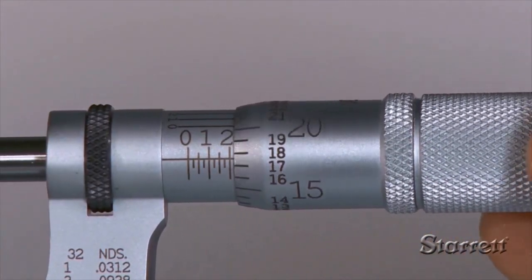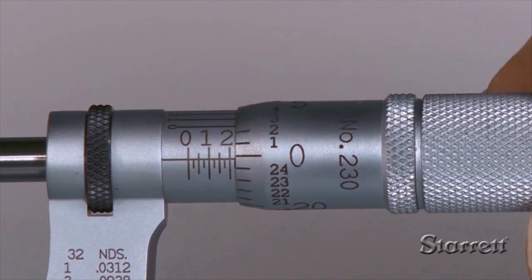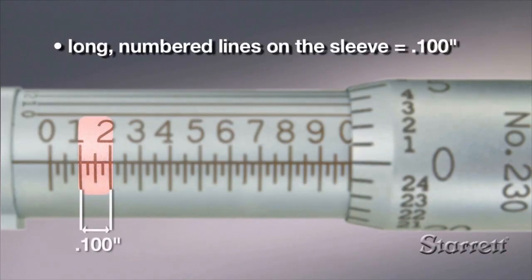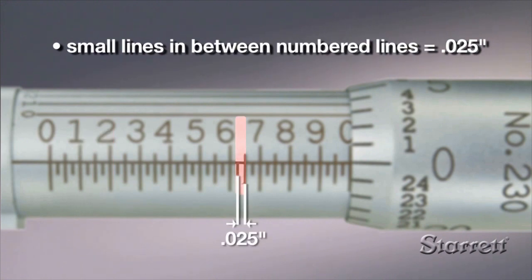Turning the thimble exposes a specific point on the stationary sleeve scale. Each of the numbered segments on the sleeve is one hundred thousandths or a tenth of an inch. The three lines in between the numbered lines are each twenty-five thousandths of an inch.